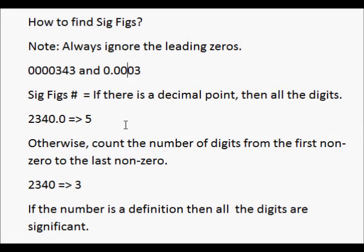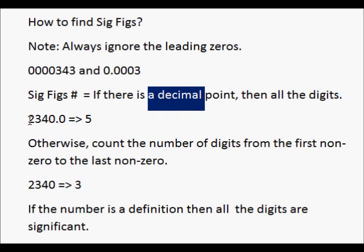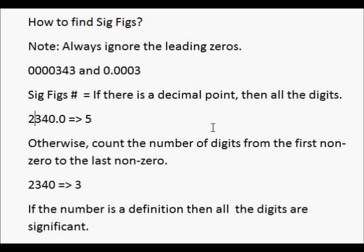The amount of significant figures: if the number has a decimal point, then it's all the digits. So on this one, there's a decimal point right here. Therefore, all the digits are significant — so 1, 2, 3, 4, and 5.